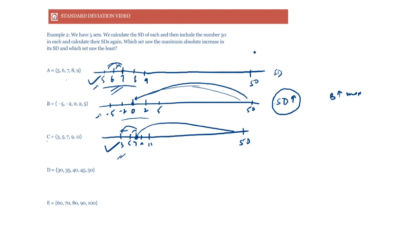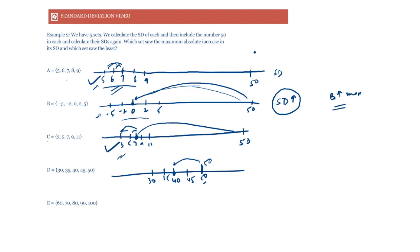For set D = {30,35,40,45,50} with mean 40: when we add another 50, the difference between 50 and the mean 40 is only 10. So we are adding just (10)² to the numerator, while the denominator goes from 5 to 6 — same as all other sets. The SD of D will increase, but only by a small amount, certainly much less than it increased for set B where we added (50)².